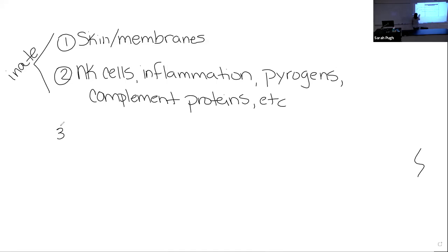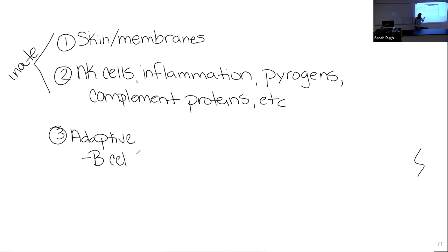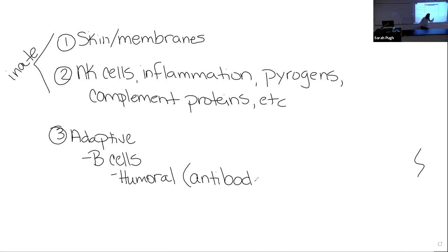We also have that third line of defense — our adaptive defenses. These are the ones we can improve over time. When you think about building your immune system, this is what you're thinking about. The adaptive defenses include our B cells, which provide humoral immunity — that means they protect our body's fluids. These cells make antibodies, and the antibodies float around in your body's humors: blood plasma, lymphatic fluid, and tissue fluid. Antibodies flag free-floating foreign organisms for destruction.